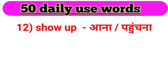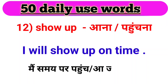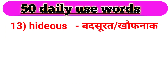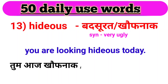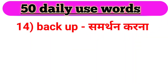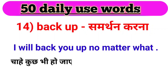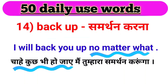Agla hamaara ek phrasal verb hai — show up. Show up ka matlab hota hai aana ya pahunchna. For example: I will show up on time. Main samay par pahunch jaunga. Next word, we have hideous. Hideous ka matlab hota hai bad surat ya khaufnaak. For example: You are looking hideous today. Tum aaj khaufnaak ya bad surat dikh rahi ho. Next phrasal verb — back up. Back up ka matlab hota hai samarthan karna. For example: I will back you up no matter what. Chahe kuch bhi ho jaaye, main tumhara samarthan karunga.